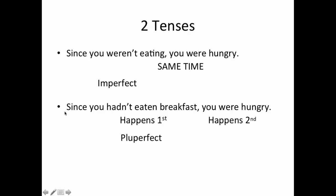On the other hand, this second sentence: 'Since you hadn't eaten breakfast, you were hungry.' The not-eating-breakfast part happens first — 'hadn't eaten breakfast' — and the 'you were hungry' part happens second. So anytime you're talking about before a past action, you're going to use the pluperfect, just as you typically do in other sentences. It's always going to be translated as 'had verbed' — so in this case, 'had eaten.'